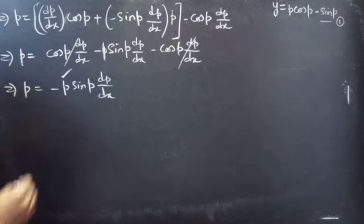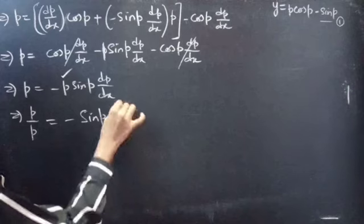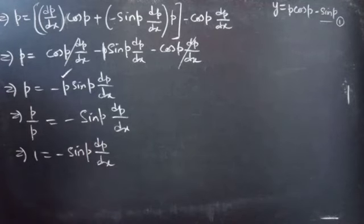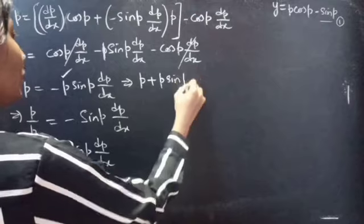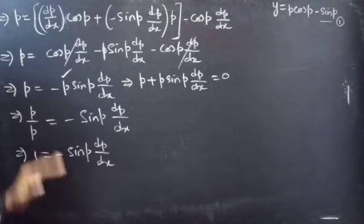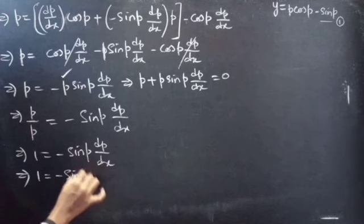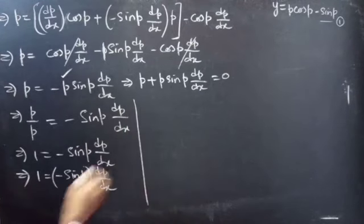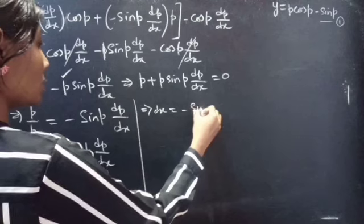Now take this p to the LHS — we get p/p equals minus sin(p)·dp/dx. From this we get 1 equals minus sin(p)·dp/dx. Or if we bring this term to the LHS, we get p plus p·sin(p)·dp/dx equals 0. We can talk about this equation later. First we'll continue here. Then we get 1 equals minus sin(p)·dp/dx.